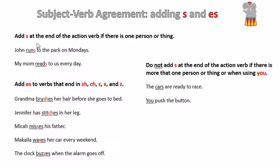Here's the rule. Add S at the end of the action verb if there is one person or thing. John runs to the park on Mondays. The one person or thing in this sentence is John, and the action verb is run. So if we're talking about John, we've got to add an S to run.